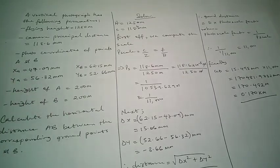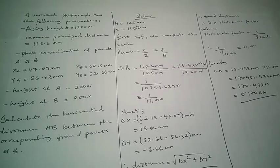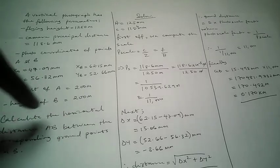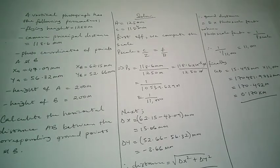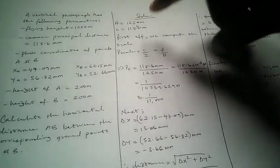The task is to calculate the horizontal distance AB between the corresponding ground points A and B. The simple explanation is that on a particular photograph two points were identified and we were given their coordinates. We want to calculate the corresponding ground distance between those two points. The first thing is to extract the data given to us from the question.